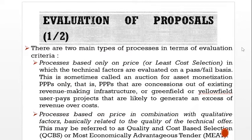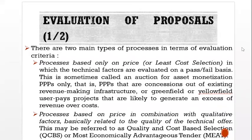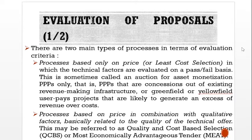Evaluation of proposals. There are two main types of processes in terms of evaluation criteria. Processes based only on price — or least cost selection — in which the technical factors are evaluated on a pass or fail basis. This is sometimes called an option for asset monetization for PPPs only — that is, PPPs that are concessions out of existing revenue-making infrastructure or greenfield or yellowfield user-based projects likely to generate an excess of revenue over cost. Processes based on price in combination with qualitative factors, basically related to the quality of the technical offer.